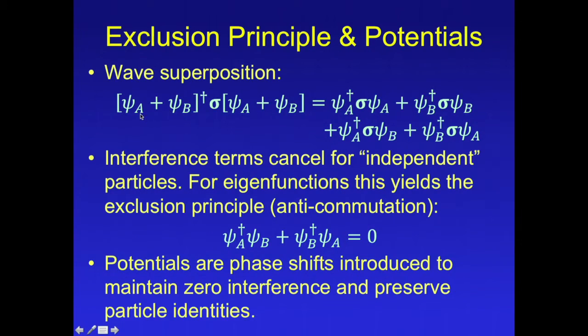If we have two wave solutions and try to add them together in form of superposition, what we find is that these spins would add together, but we also have some interference terms between the two different waves. But if we require that these spins be additive, then the interference terms would have to cancel. And for that to happen, if these are spin eigenfunctions, we would get the Pauli exclusion principle, which says that the two wave functions have to anti-commute.